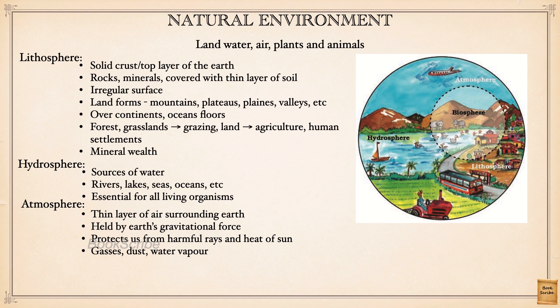The atmosphere contains many gases like oxygen, carbon dioxide, and hydrogen, as well as dust and water vapor. When there is a change in the atmosphere, it also changes the weather and the climate — rain, snow, heat, and many things are caused by changes in the atmosphere.